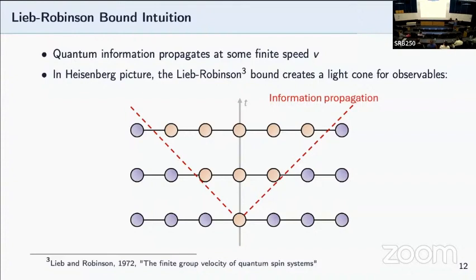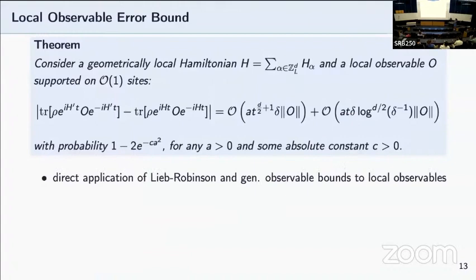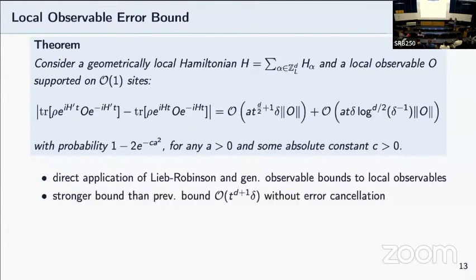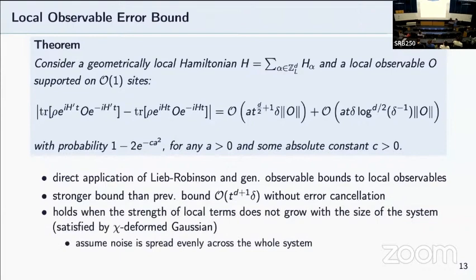So applying this Lieb-Robinson bound, we get to our next result, which is essentially saying that as before, we have a local observable O and a local Hamiltonian H. We have a perturbed Hamiltonian H prime, and we show that their error bound scales with t to the d over 2 plus 1. Again, just a reminder, d is the dimension of the lattice space. So what this means is that it's stronger than the previous derived bound of t to the d plus 1 without the error cancellation case, again, when G_i is simply a constant delta. In order to use the Lieb-Robinson bound, there is some restriction as to the local errors, which is the reason we place the physical noise being bounded restriction when we define the chi-deformed Gaussian. Here we need to assume that the noise is spread evenly across the system in order to have this result.